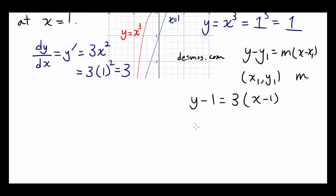You can simplify this, if you want to, to y minus 1 equals 3x minus 3, or y equals 3x minus 2, if you want to put this in slope intercept form.